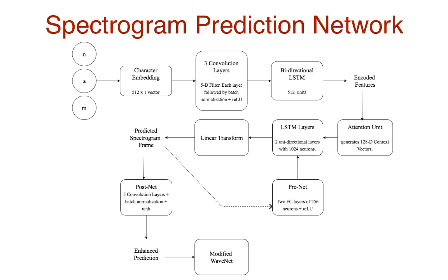The output is projected via a linear transform to get the predicted spectrogram frame, which is then passed to a post-net — essentially five convolutional layers, each followed by batch normalization and a tanh activation. This enhances spectrogram frame prediction, and the result is then passed to the second component of Tacotron 2: the modified WaveNet vocoder.